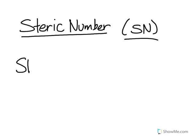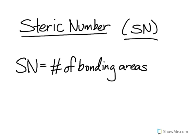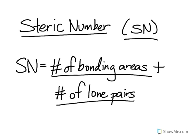Now the steric number is actually the result of the addition of a couple of different things. It's the number of bonding areas added to the number of lone pairs. When we talk about the number of bonding areas and the lone pairs, we're talking about the number of bonding areas and lone pairs around the central atom.